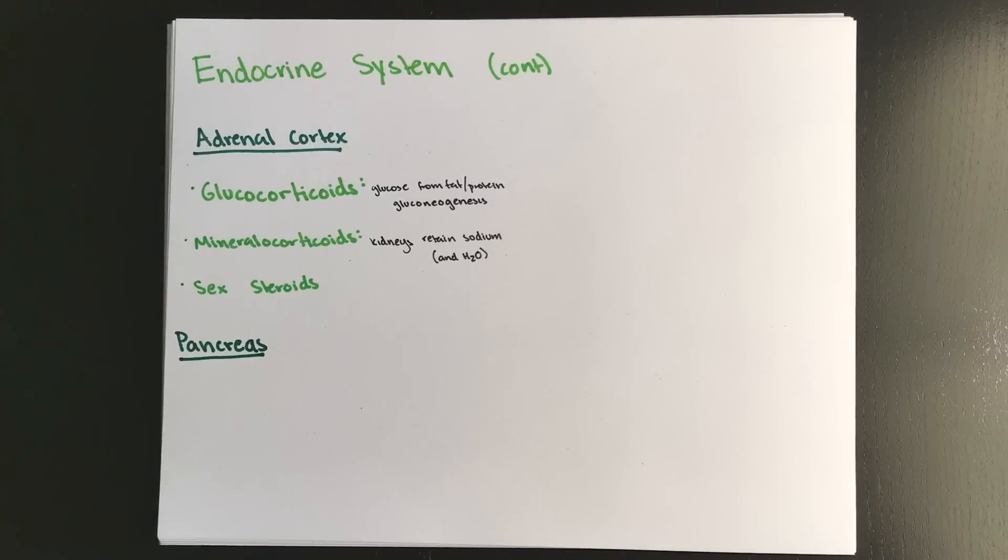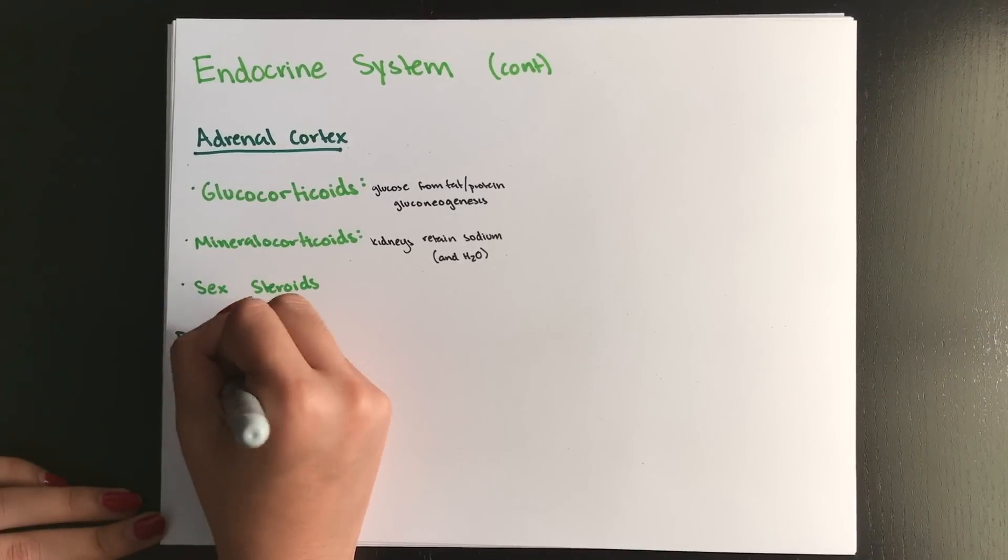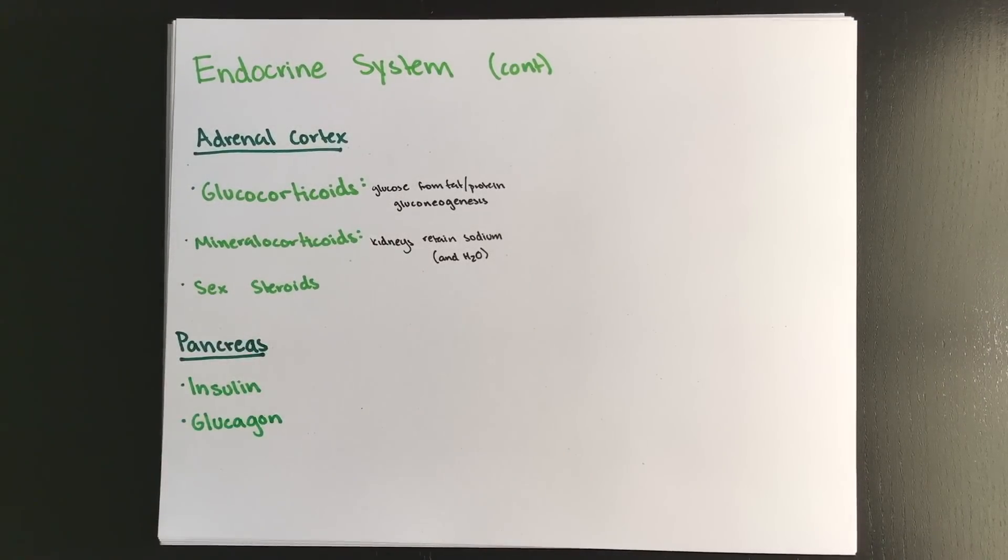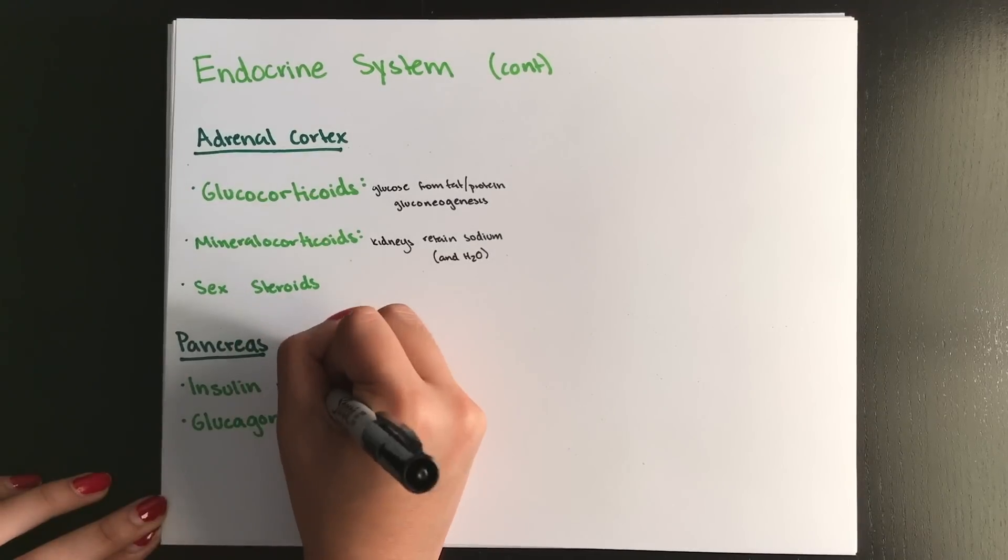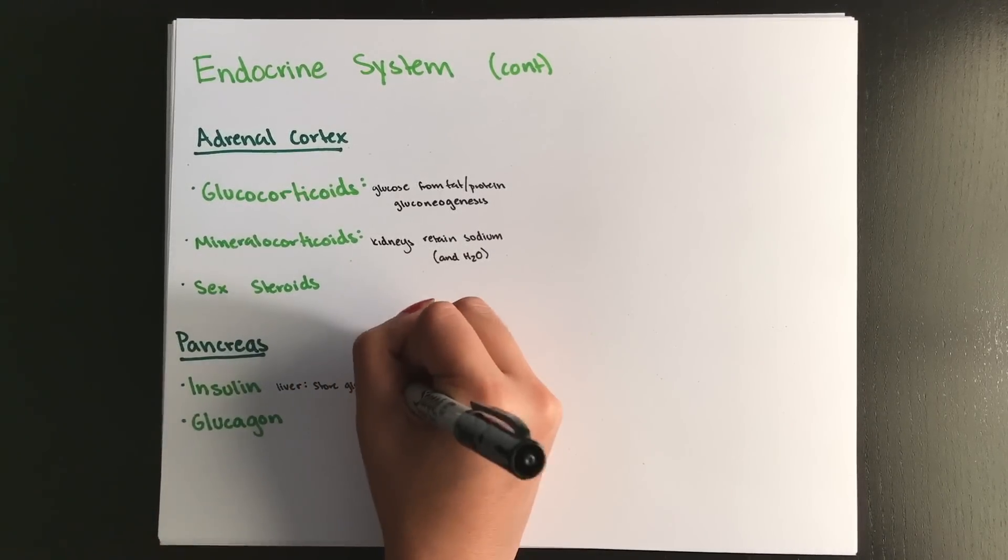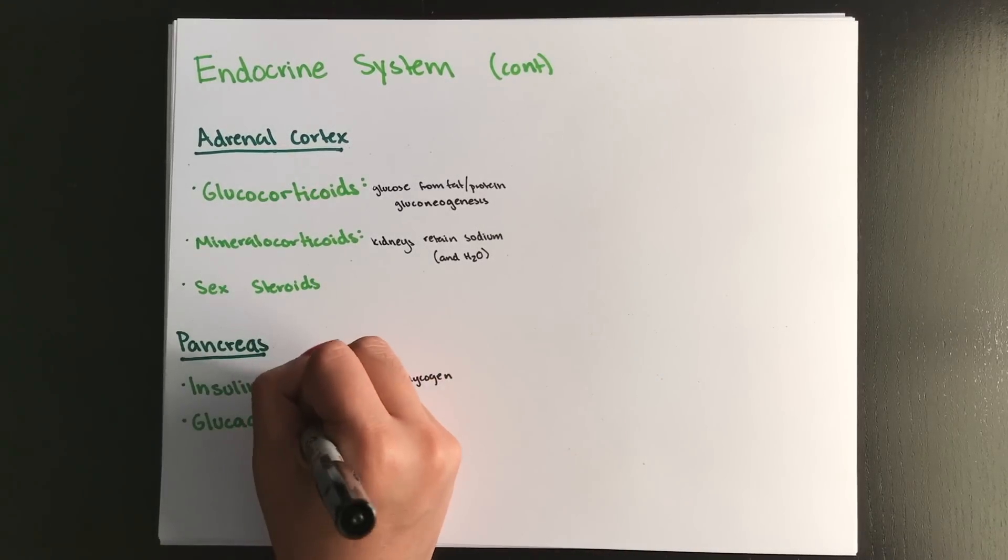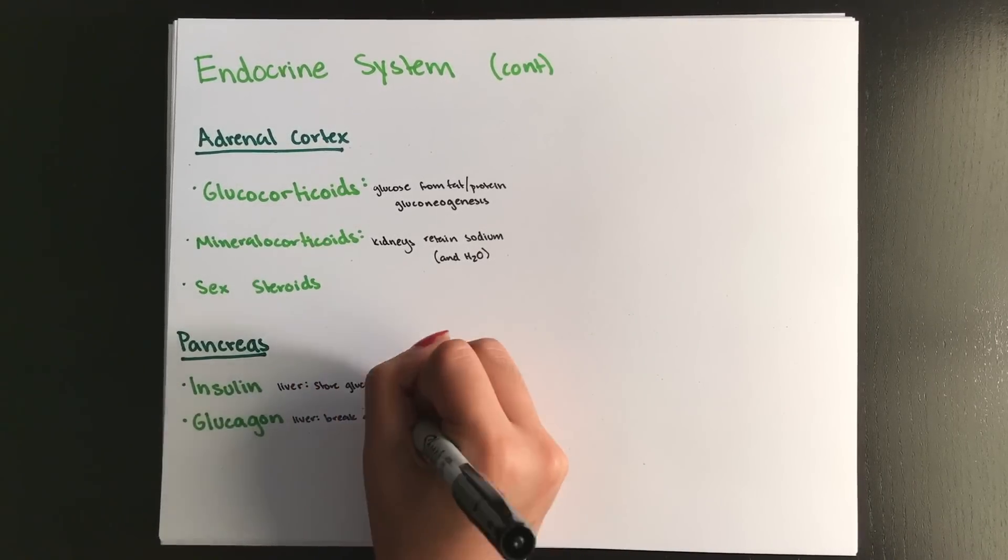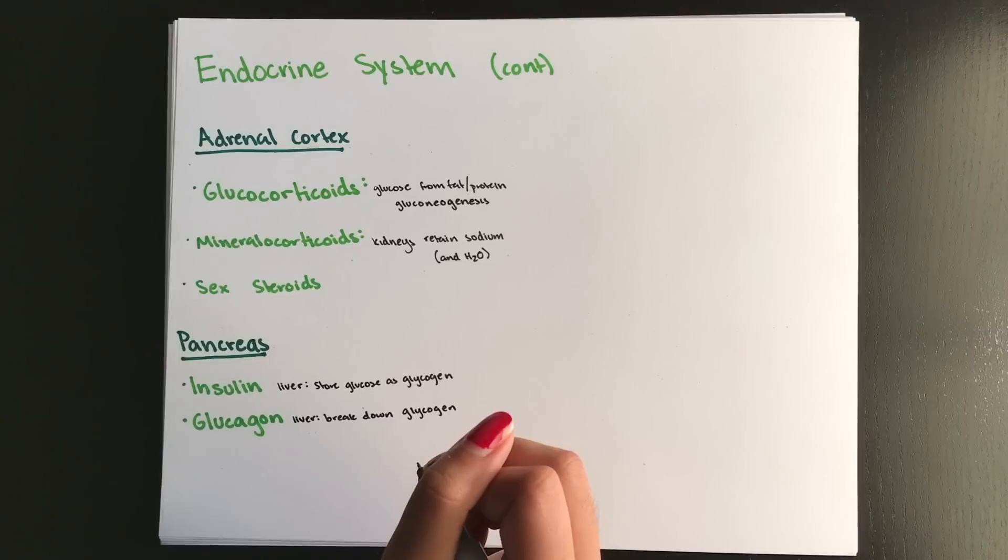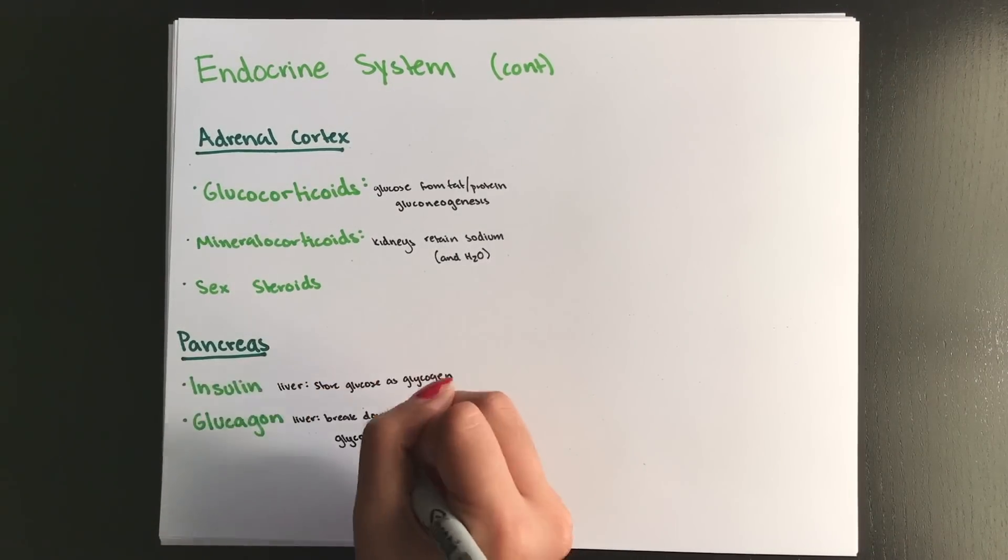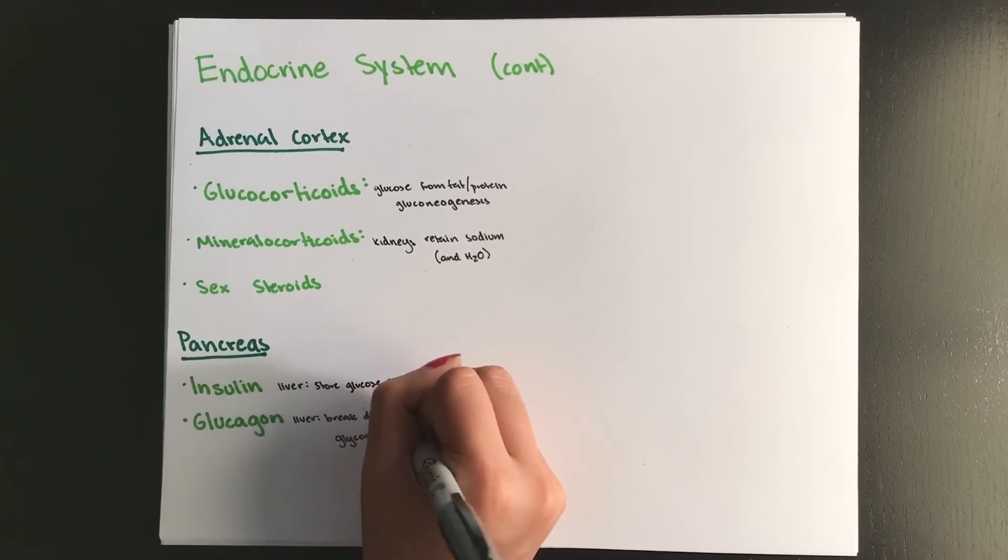Now the pancreas secretes hormones and many digestive enzymes like we talked about earlier. The pancreas secretes insulin and glucagon, and these hormones are produced by the islet cells. Insulin is secreted when blood glucose levels are high, and they stimulate the liver to store glucose as glycogen. Glucagon is the opposite, like exactly the opposite. So whenever blood glucose is low, it will be released, causing the liver to break down glycogen, and this process is called glycogenolysis.